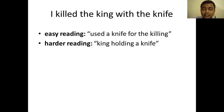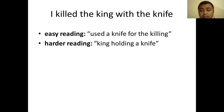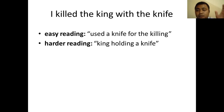Another practice: 'I killed the king with the knife.' This is also in the e-book you have received. The two interpretations: first — use a knife for the killing, meaning I used the knife to kill the king. Second — the king was holding a knife, so I killed the king who was holding a knife. The difference is: in the first, the knife is the instrument of killing; in the second, the king is the one holding the knife and I killed him. That is the difference between the two interpretations of 'I killed the king with the knife.'